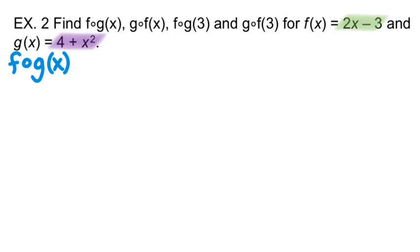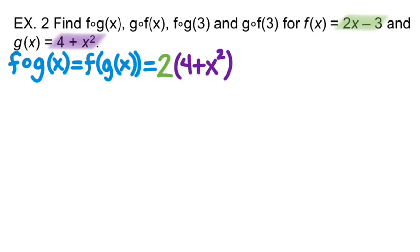So for F of G, this means I'm taking the G function and plugging it into the F function. So everywhere there's an X is where I would substitute the G function and everything else stays the same. So 2 times 4 plus X squared minus 3. I can't do anything inside the parentheses, so I'm going to distribute the 2.